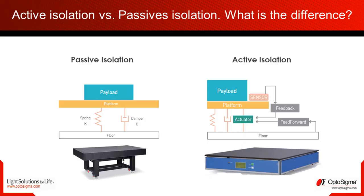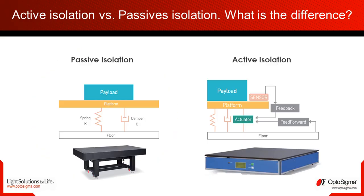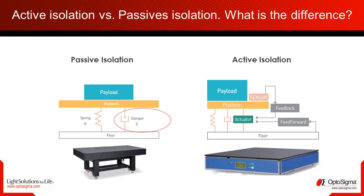An easy example of a passive vibration isolation system includes three components: a remote mass payload, a spring, and a damper. The payload and the spring stiffness define the natural frequency of the isolation system.